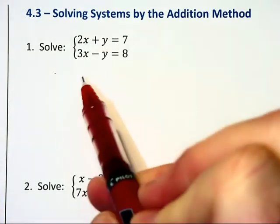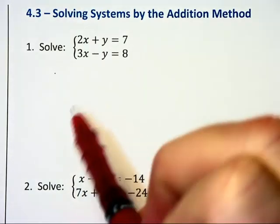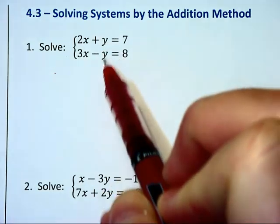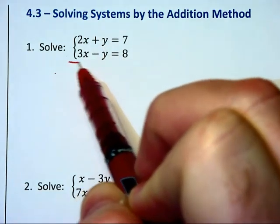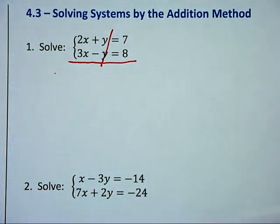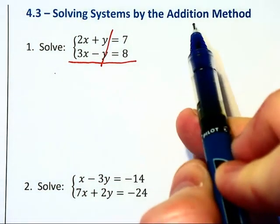Because we don't always have one variable isolated to use the substitution method. Now notice in this problem both equations have a y and a negative y which cancel out rather easily if we add the two equations together. So that's what we're going to do and that's why it's called the addition method.